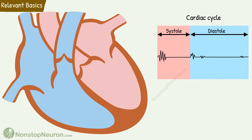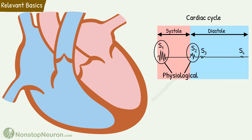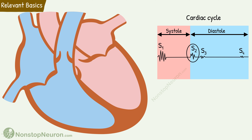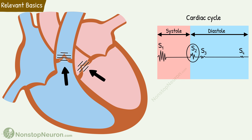A total of four heart sounds are produced during a cardiac cycle: first, second, third and fourth. Out of them, the first two sounds are the main physiological sounds. The first sound is produced due to the closure of atrioventricular valves at the beginning of the systole. And the second sound is produced due to the closure of semilunar valves at the end of the systole.